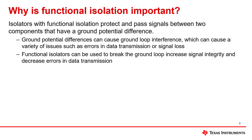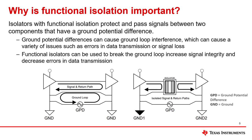Functional isolators protect signals against high ground potential differences. Ground potential difference is the voltage between two different circuits. These voltage differences cause ground loop interference, which can cause errors or signal loss in the data being transferred between two circuits or systems. Functional isolators mitigate this issue by breaking the ground loop and separating the two circuits or systems, allowing for an increase in signal integrity and reduction in data transmission related issues.